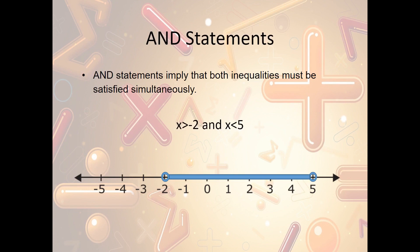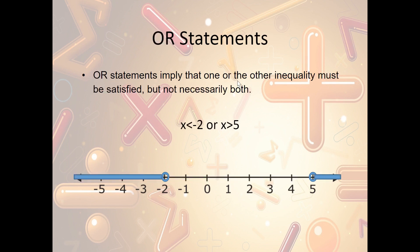Now let's talk about AND statements. AND statements imply that both inequalities must be satisfied simultaneously. For instance, x is greater than four AND less than six — it has to be between four and six. AND statements should always be shaded between the two points. Now let's look at OR statements. OR statements imply that one or the other inequality must be satisfied, but not necessarily both. We have x is less than negative two OR x is greater than five. Whenever we have an OR statement, the shading goes in two different directions — to the left from negative two and to the right from five.